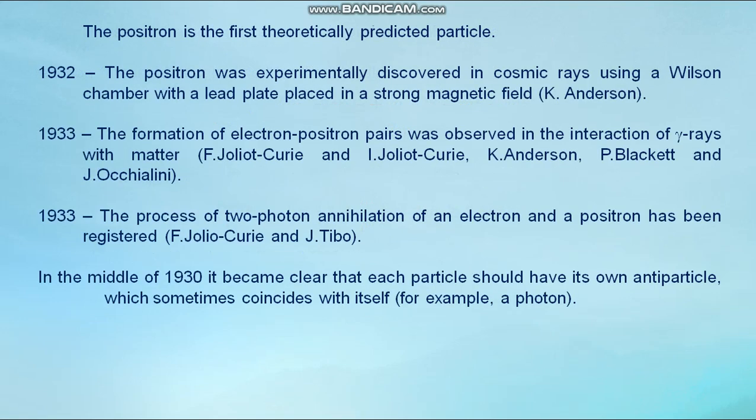The positron is the first theoretically predicted particle. 1932, the positron was experimentally discovered in cosmic rays using a cloud chamber with a lead plate placed in a strong magnetic field by Carl Anderson. 1933, the formation of electron-positron pairs was observed in the interaction of gamma rays with matter. Frédéric Joliot-Curie and Irène Joliot-Curie, Anderson, Blackett, and Occhialini. 1933, the process of two-photon annihilation of an electron and positron has been registered. Frédéric Joliot-Curie and Thibaud.